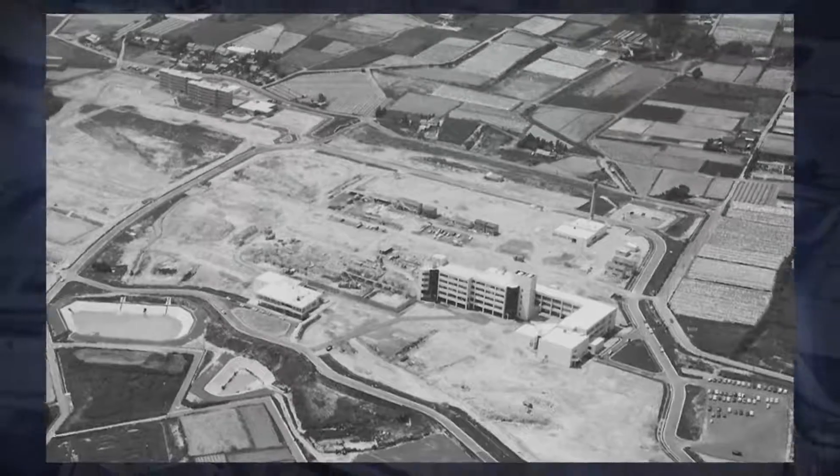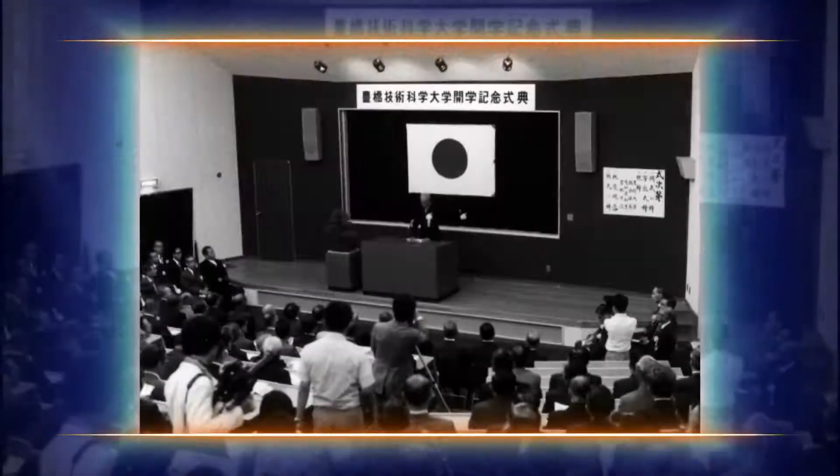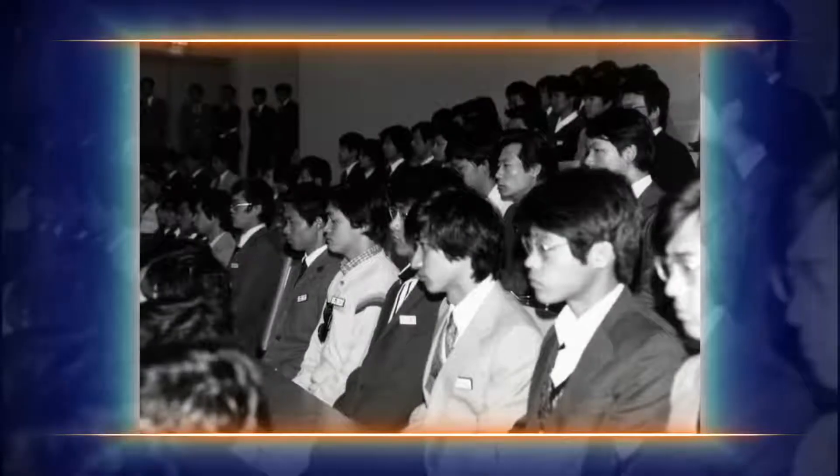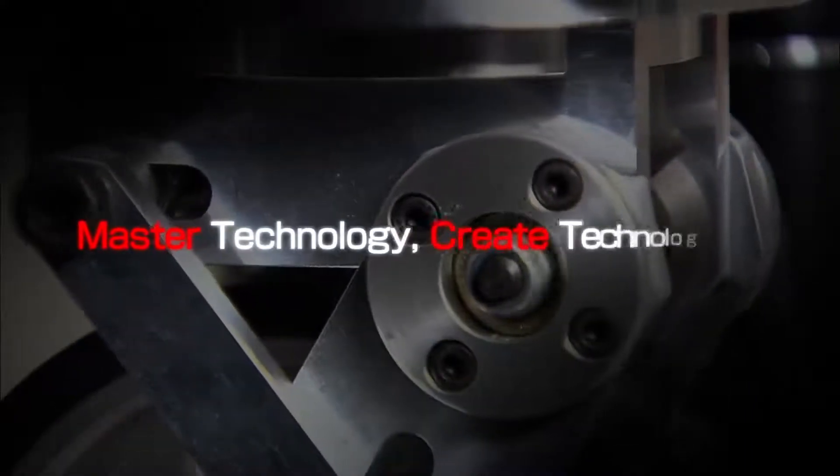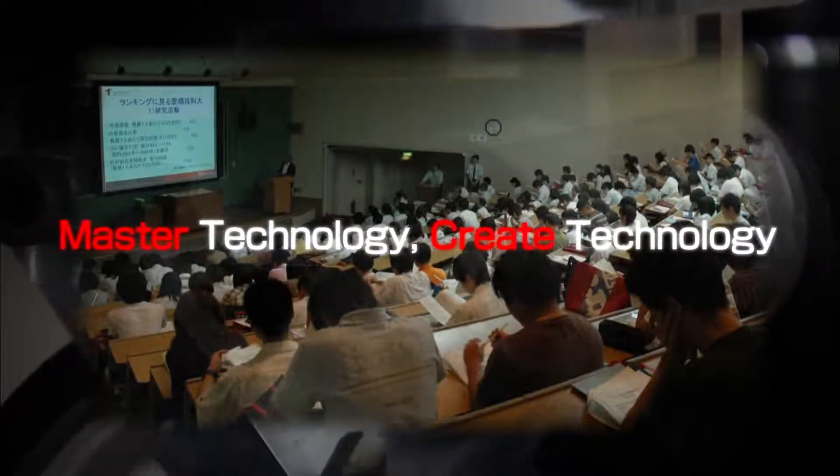A national university corporation, Toyohashi University of Technology, also known as Toyohashi Tech, is located in the city of Toyohashi, situated in the east of the predominant manufacturing prefecture of Aichi in central Japan.